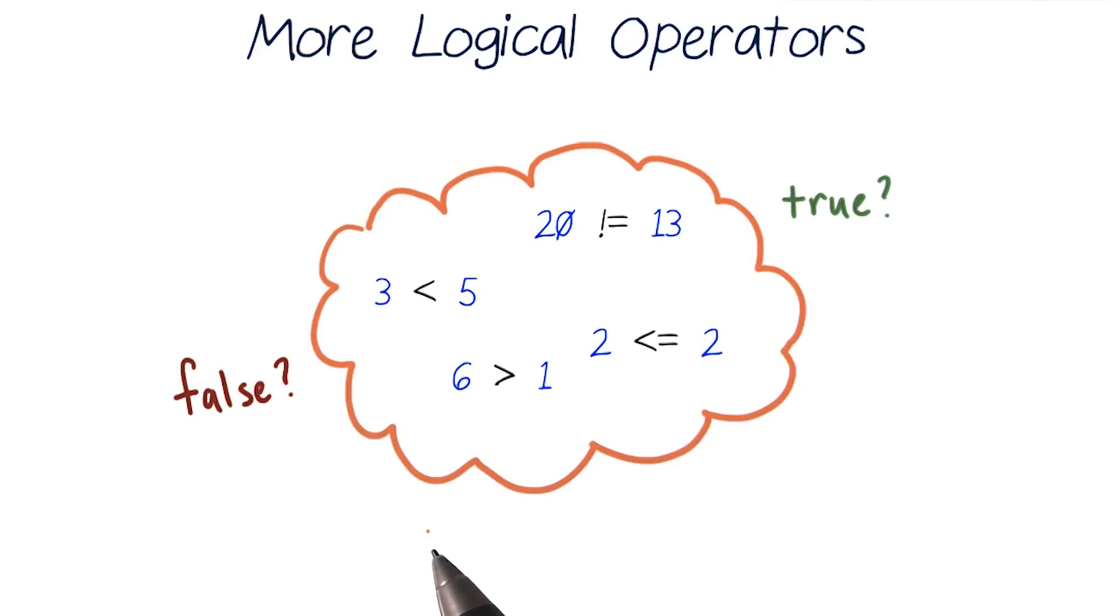So far, we've been using logical operators with expressions, like is three less than five, or is six greater than one? But in addition to our logical operators, we have all these comparisons to keep track of.